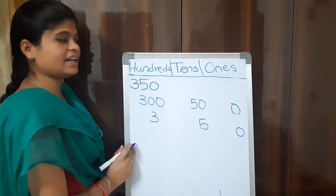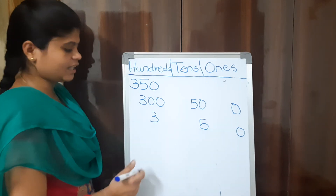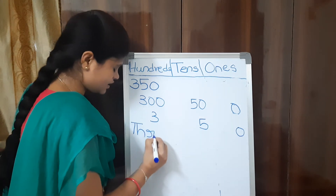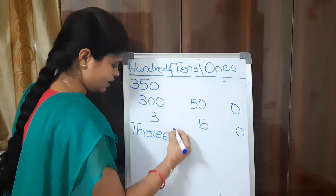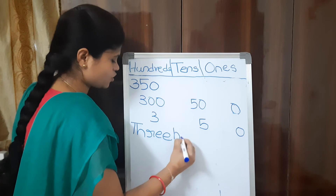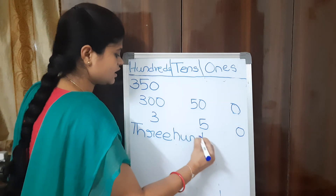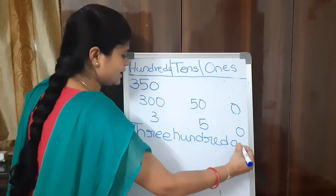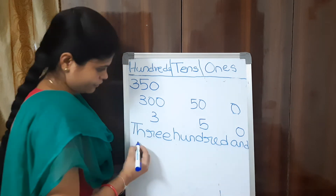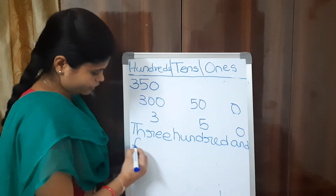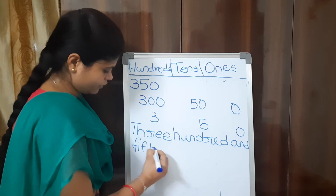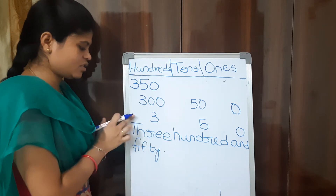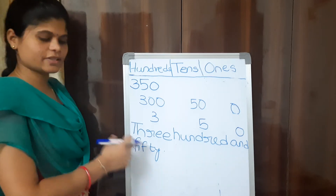What is the number name of 350? Three hundred and fifty. This is how we represent 350 in place values, digits, and number name.